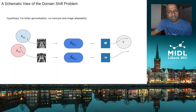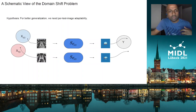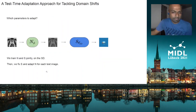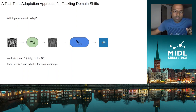Our hypothesis is that if we fix the parameters to those learned on the source domain, it is difficult to guarantee good segmentation for a completely unseen target domain. Therefore, to achieve good performance, we should allow for some per-test-image adaptability. This raises two questions: the first is which parameters to adapt — should we adapt all network parameters or some subset?